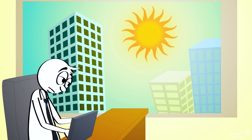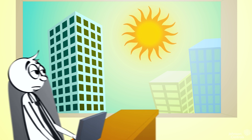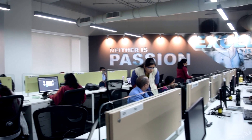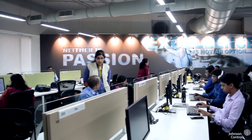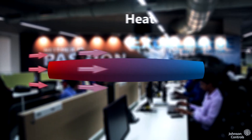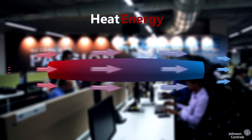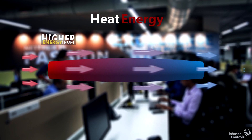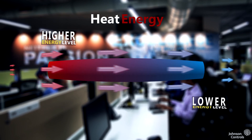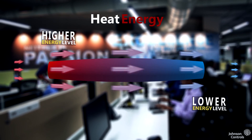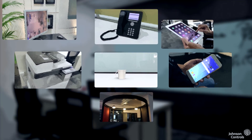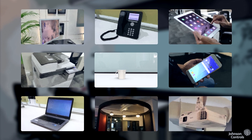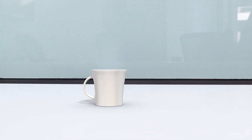But what if you could actually see it? Let's take a look at one of our offices. Heat energy has a flow, and given the chance it will always travel from a higher energy level to a lower energy level. There are many sources of heat energy in most spaces, including this office.